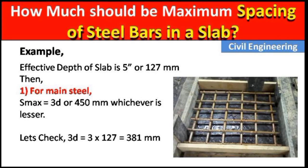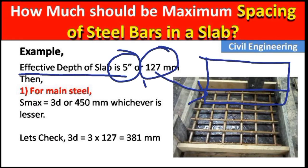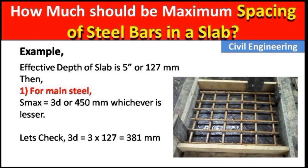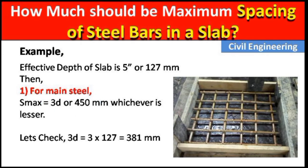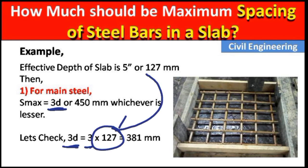Let us see an example. Here, the effective depth of the slab is given as 5 inches or 127 mm. For main bars, we analyze between 3d and 450 mm. Putting 3d: 3 × 127 gives us the calculated value.